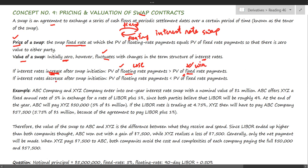Vice versa — if interest rates are decreasing, the one who pays the floating interest rate will be benefited as they will be paying lesser interest than the fixed rate. To understand this, let's take an example with Company A and Company B.